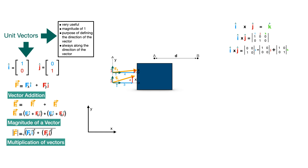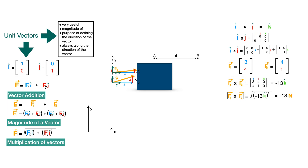Using the same matrix multiplication method, we can calculate other unit vector products. For example, k-hat times i-hat equals j-hat, and j-hat times i-hat equals minus k-hat. There are also other more efficient vector multiplication methods, such as the dot product and the cross product.